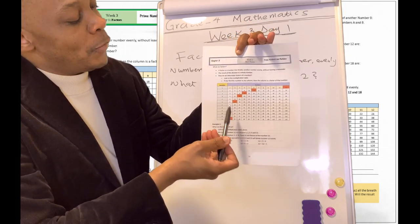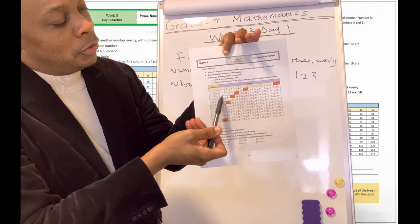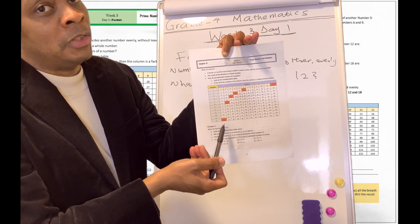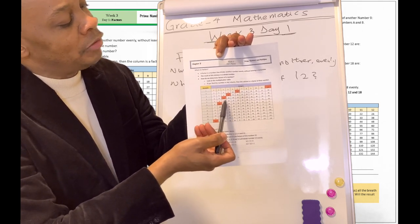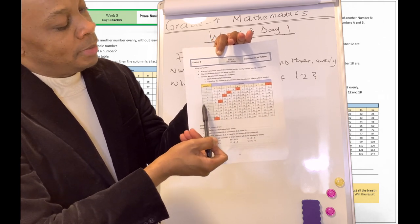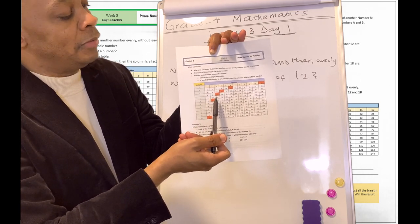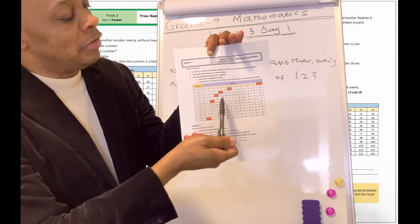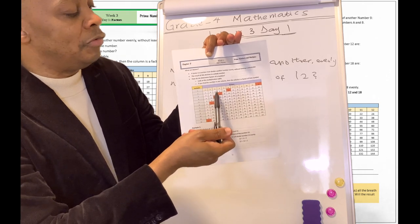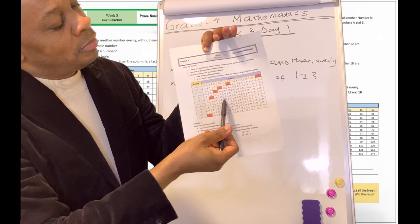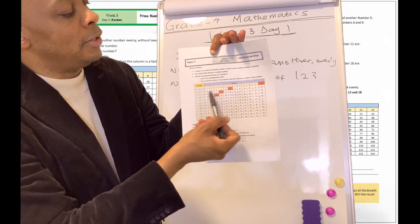I can find the number 12 in column number one — one times 12 is 12 — so one is a factor of 12. I can find 12 in column number two, because two multiplied by six is 12, so two is a factor of 12. In column three, three is a factor of 12. In column four, four times three is 12, so four is a factor of 12. Five — I cannot find 12 in column five. Six — six multiplied by two is 12, so six is a factor of 12.